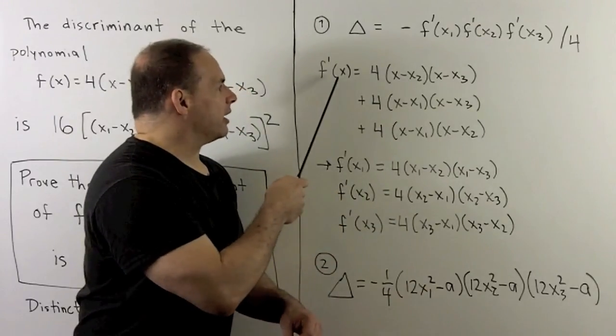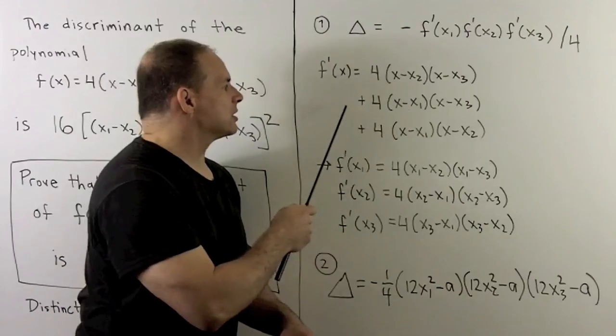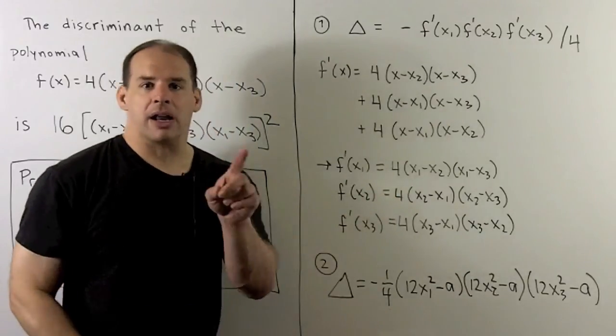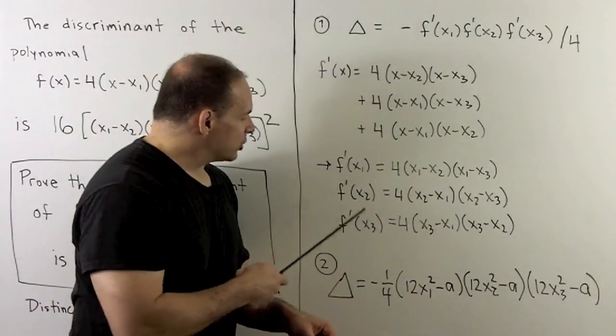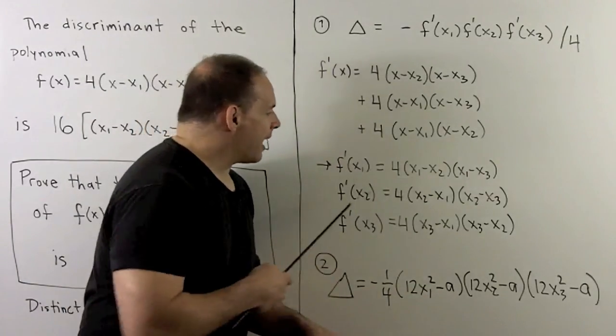If we evaluate at any of the roots, we're going to lose two of these terms, and then what's left over is going to be a product of differences. We have these three expressions here, and then we just multiply them together.